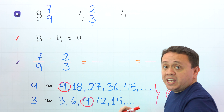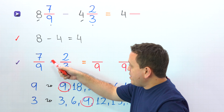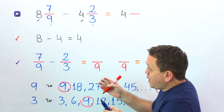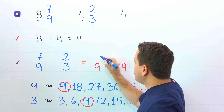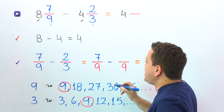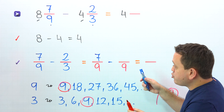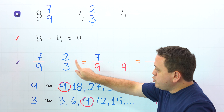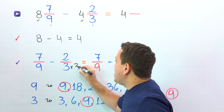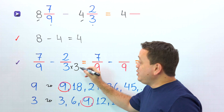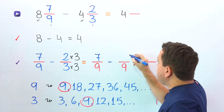Pay attention! For each fraction, we need an equivalent fraction with a denominator of 9. Let's start with 7 ninths — hold on, this fraction already has a denominator of 9, so we don't need to make any changes. We put the same fraction, 7 ninths. Then we have the minus sign, and we are going to work with the second fraction. We are going to rewrite 2 thirds as an equivalent fraction with a denominator of 9. By what number should I multiply 3 to get 9? By 3. Whatever we do to the bottom, we must do to the top, so we multiply by 3 up here, and 2 times 3 gives us 6.